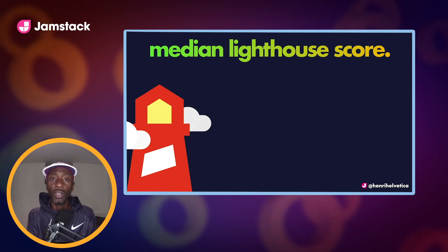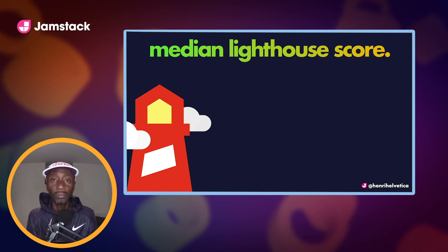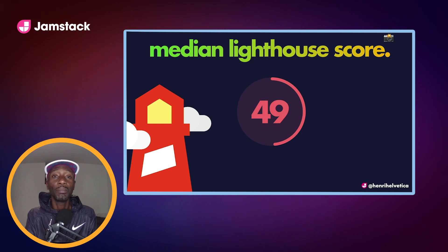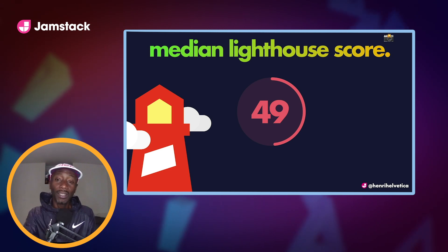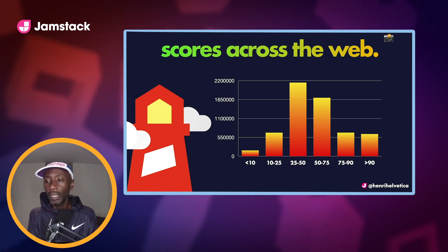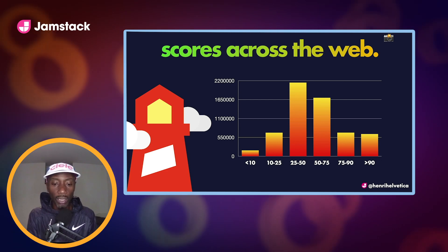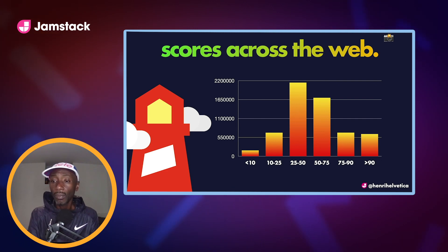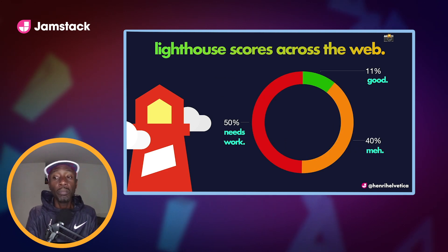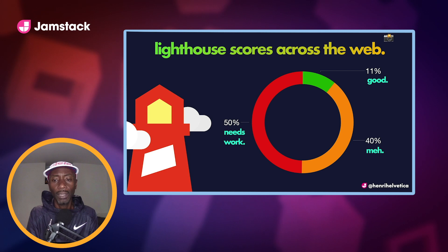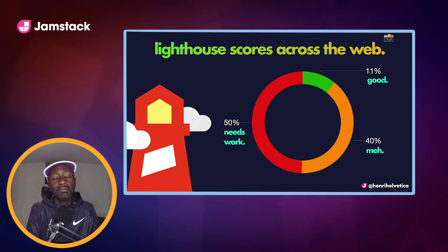Let's look at some additional data. What is the median Lighthouse score across the web? It's 49 — a failing grade. Looking at score distribution across 6 million sites, the majority score between 25 and 50, just under 2 million sites. In more familiar color coding — red, yellow, green — 50% of sites are essentially not passing, 11% are doing very well, and 40% are in the middle.